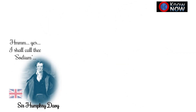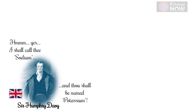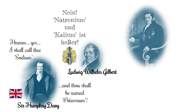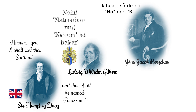The English names sodium and potassium were chosen by Sir Humphry Davy, who first isolated these elements in 1807. In 1809, the German physicist and chemist Ludwig Wilhelm Gilbert proposed the names neutronium for sodium and kalium for potassium. The symbols Na and K were later adopted by the Swedish chemist Jöns Jakob Berzelius, who preferred the Latin names for their international recognition.